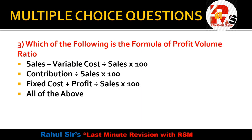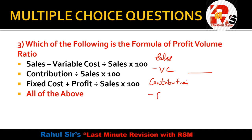Question number 3: Which of the following is the formula of Profit Volume Ratio (PVR)? The options include: sales minus variable cost divided by sales into 100; contribution divided by sales into 100; fixed cost plus profit divided by sales into 100; and all of the above. The answer is all of the above. In the marginal costing format: sales minus variable cost gives contribution.